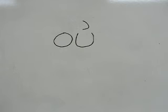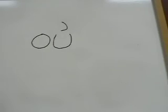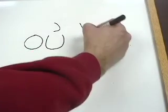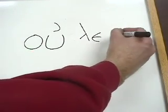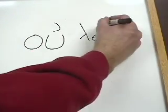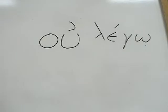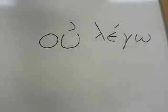So if you want to say I do not say, it's going to be ou, let me write it little, ou-lego would translate as I do not say. So ou is an easy word to learn, just takes a few brain cells, and it means not.